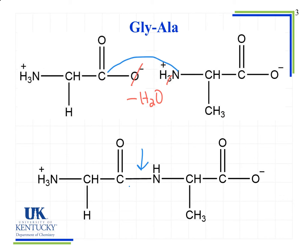That's going to happen every time we see two or more amino acids coming together. If we had ten amino acids, we would see the same thing — another bond forming from a carbonyl carbon to a nitrogen, and so on. The bond is always going to form between a carbon and a nitrogen, and we will always see the same backbone again and again: nitrogen, carbon, carbon, nitrogen, carbon, carbon — even with 20 amino acids in a sequence.